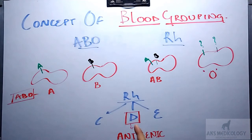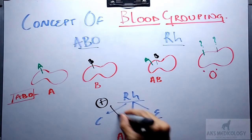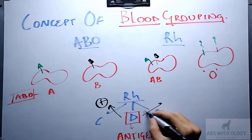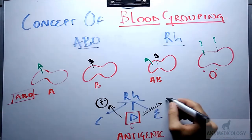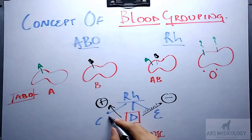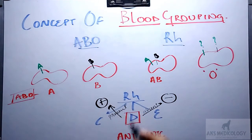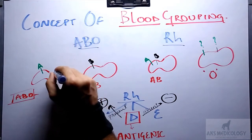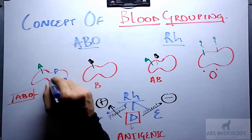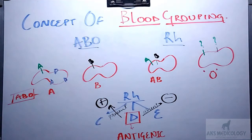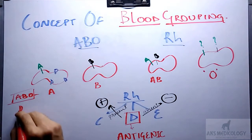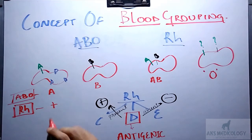Therefore, the presence or absence of antigen D is considered for RH blood grouping. If antigen D is absent, the blood group of that individual would be RH negative. If antigen D is present over the surface of the RBC, the blood group of that individual according to the RH blood grouping system would be RH positive.